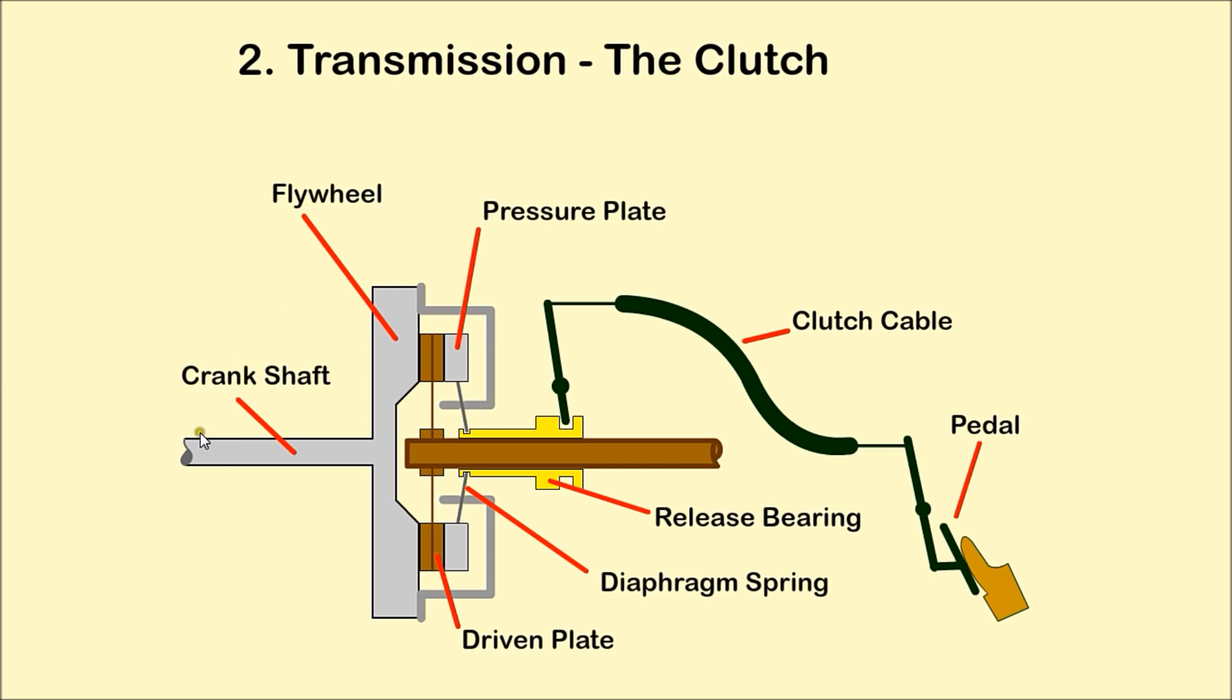The driven plate is sandwiched between the flywheel and the pressure plate. When the clutch is pressed, the release bearing moves and the driven plate travels along the splined shaft away from the flywheel, allowing the driven plate to rotate independently of the flywheel.